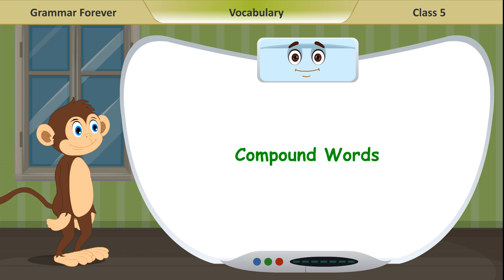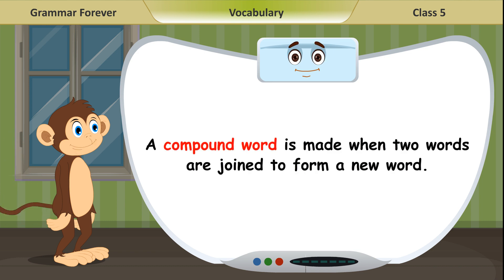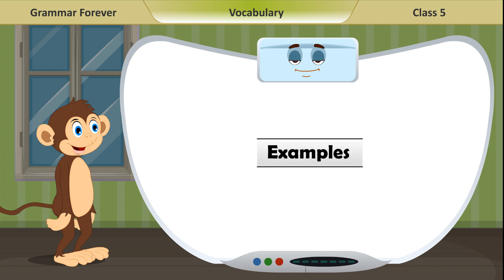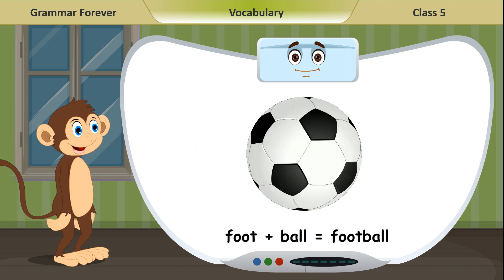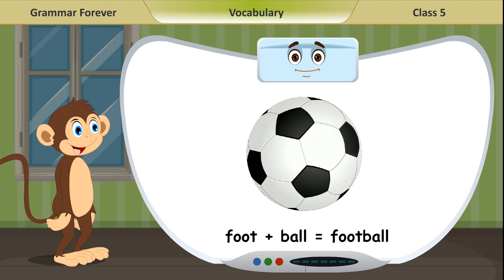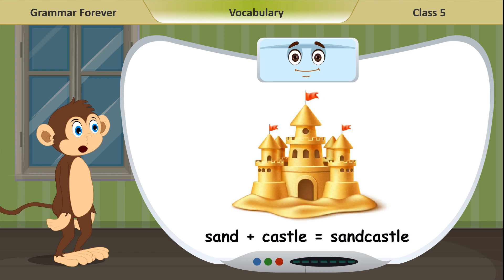Compound words. A compound word is made when two words are joined to form a new word. Examples: foot plus ball equals football; sand plus castle equals sandcastle.